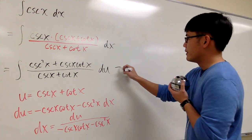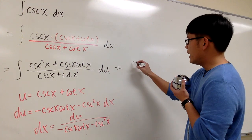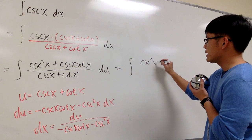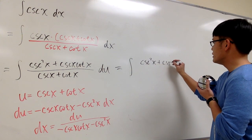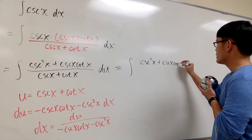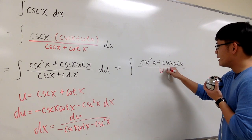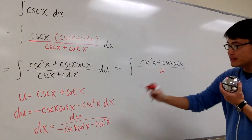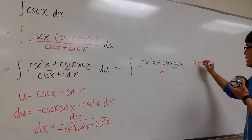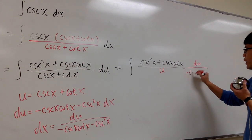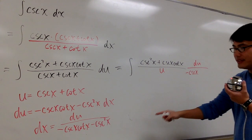Now, let's see. This is the same as the integral. On the top, we have cosecant squared x plus cosecant x cotangent x. Over the bottom is just the u. And then the du is that. We have du over all that stuff.